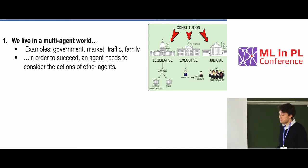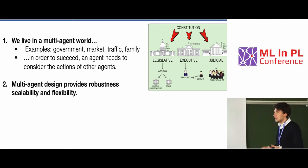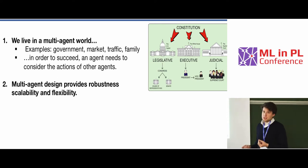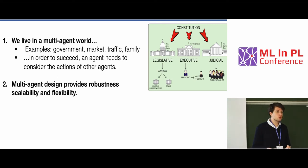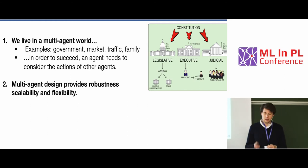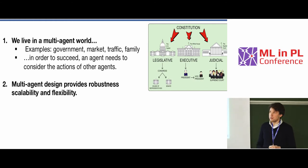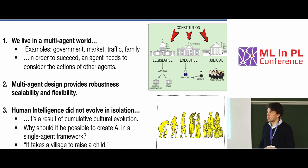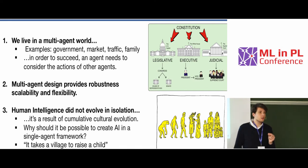The second reason is purely practical: a multi-agent design provides robustness, usually flexibility and scalability. And the third argument, which for me personally is very exciting, is that human intelligence did not evolve in isolation.